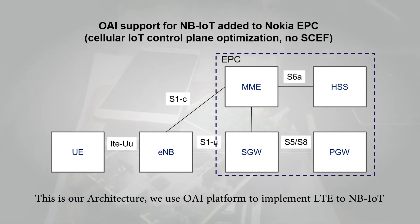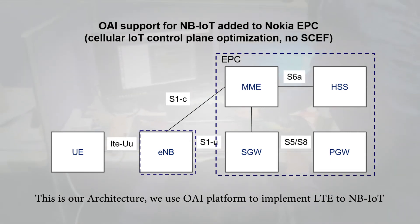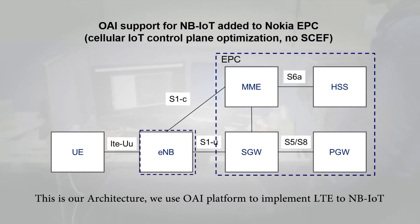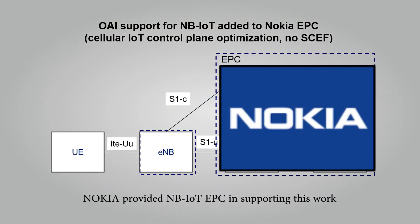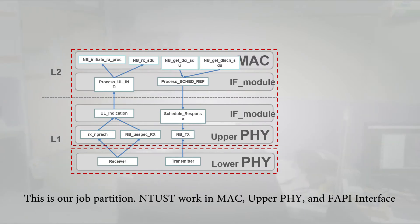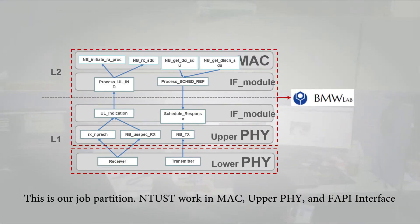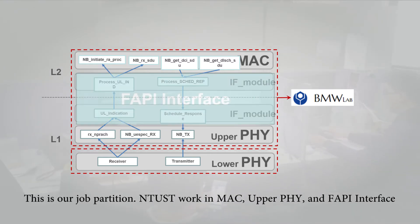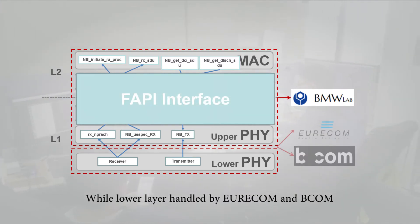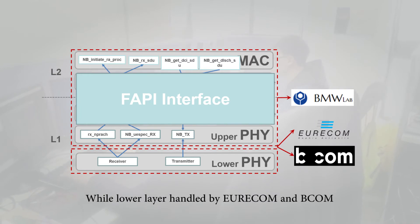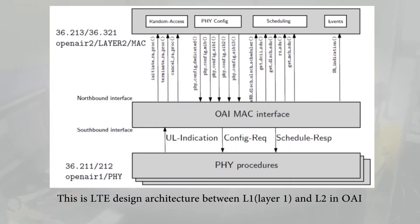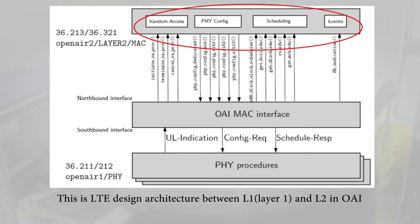This is our architecture — we use the OAI platform to implement LTE to NB-IoT. Nokia provided the NB-IoT EPC in support of this work. Our team works on MAC, upper physical layer, and the FAPI interface, while the lower layer is handled by Eurocom and VECOM. This shows the LTE design architecture between layer 1 and layer 2 in OAI.